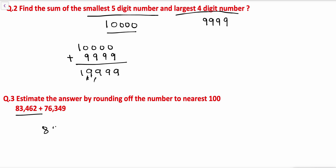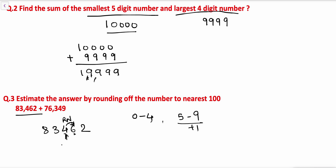We have to round off the number 83462 to the nearest hundred. So 4 is the rounding number. The rule is: if the digit just right of the rounding number is from 0 to 4, keep the rounding number as it is and change all digits to the right to zero. If it is from 5 to 9, add 1 to the rounding number. Here the digit just right of 4 is 6, which is from 5 to 9, so the rounding number changes to 5. Therefore, 83462 is rounded off to 83500.